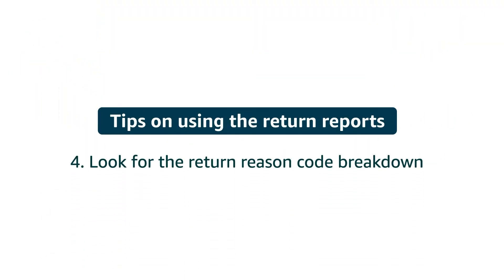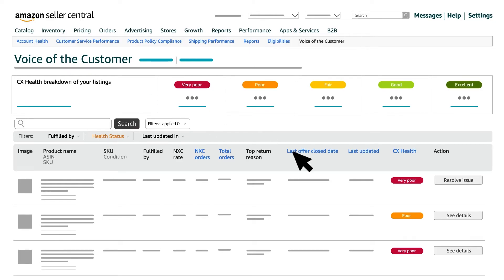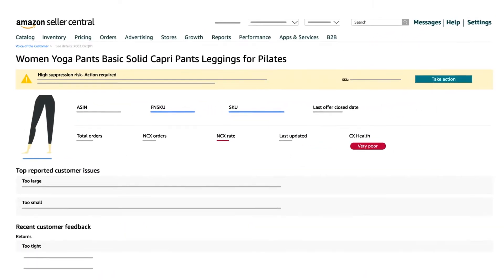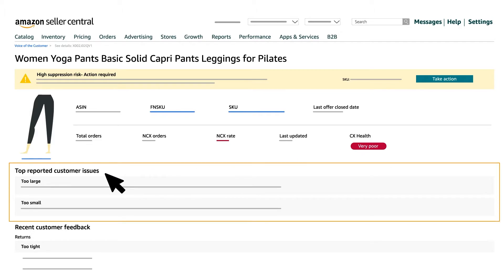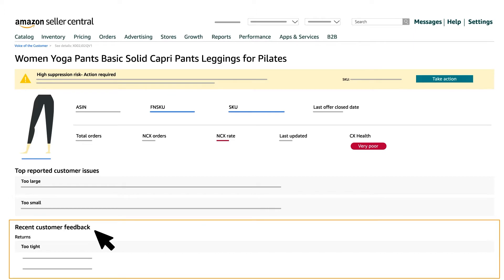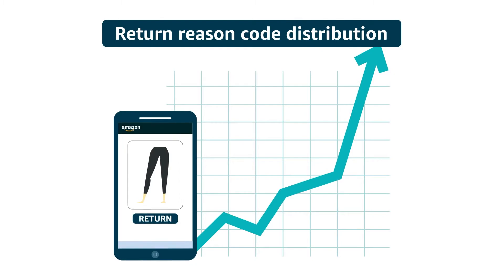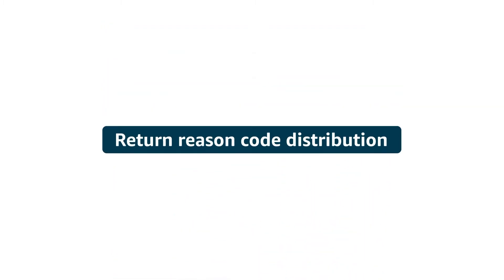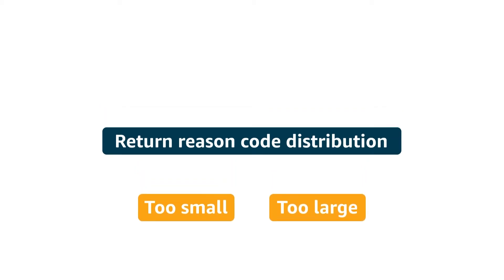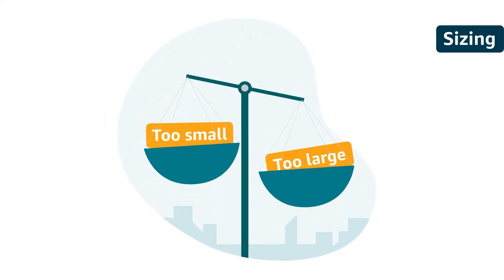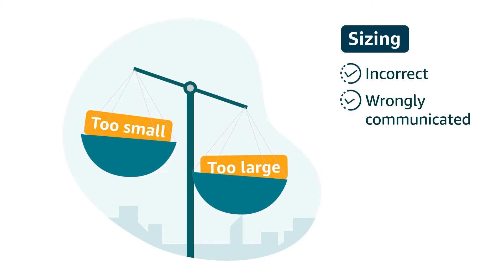Fourth, using the See Details button, you can access the details for a specific ASIN. Look for the Return Reason Code breakdown and corresponding customer feedback for the previous 30 days. Customer feedback includes return comments and product reviews. You can also look for trends within the Return Reason Code distribution. For example, if the distribution between too small and too large has a big imbalance, your sizing might be incorrect or wrongly communicated.